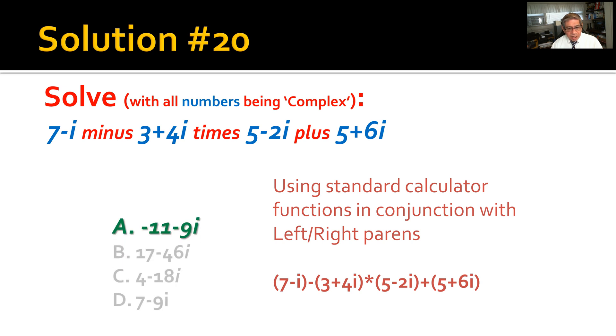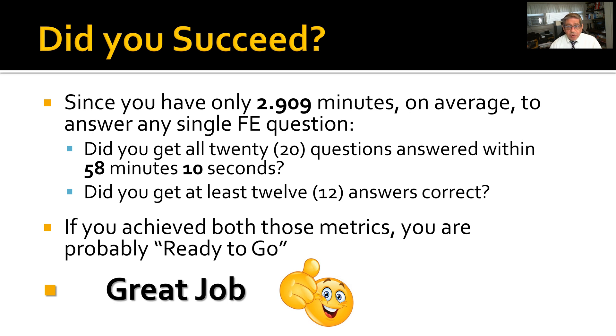So how did you do? Just keep in mind you only have 2.909 minutes on average to answer any single FE question. Did you get all 20 questions answered within a total of 58 minutes and 10 seconds? Hopefully you did. Did you get at least 12 of those answers correct or more? Been better if you got 13 or 14, but 12 would squeak you through. Well, if you achieve both of those metrics, you're probably ready to go. That's a great job.